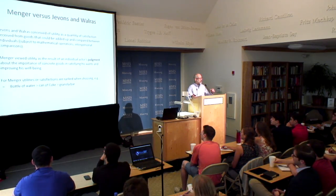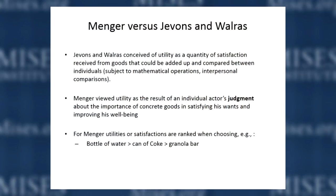So what were the differences between Menger on the one hand and Jevons and Walras on the other? Jevons and Walras conceived of utility as a sort of quantity of satisfaction that you could add up, subtract, and do mathematical operations on — and compare interpersonally. Menger, on the other hand, simply viewed marginal utility as the outcome of individuals' judgments on what things in their environment — which we call goods — were more important and what goods were less important.